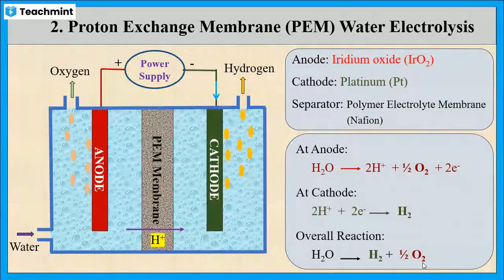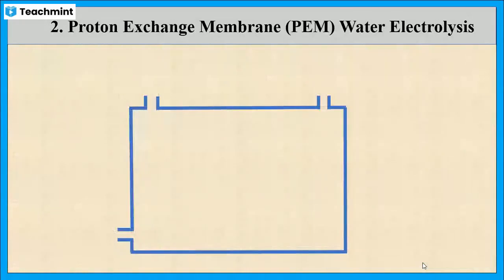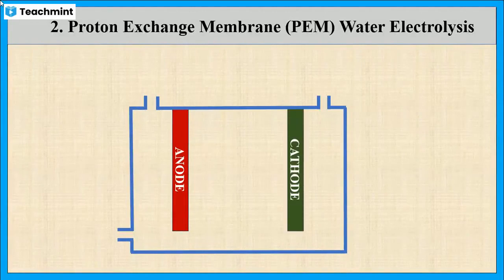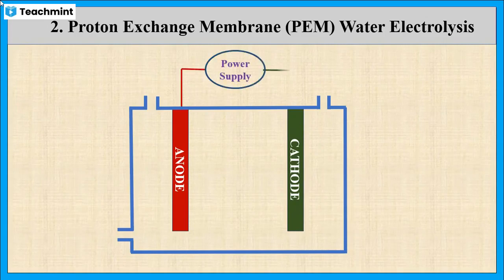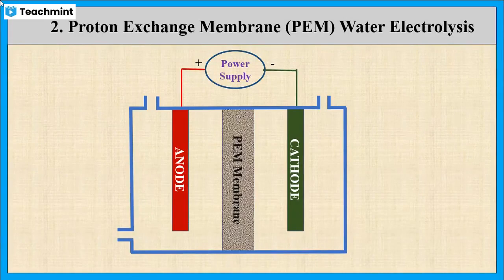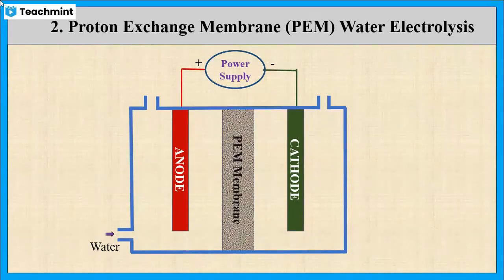Now, let us summarize once again. PEM electrolyzer contains two electrodes: anode made up of iridium oxide and cathode made up of platinum. These two electrodes are connected to power supply and separated by PEM membrane. When water is passed through the anode chamber,